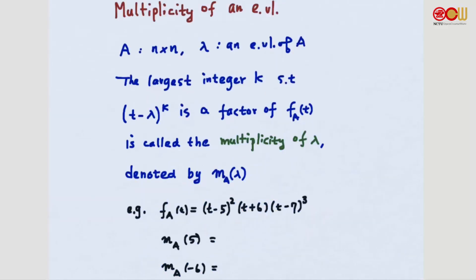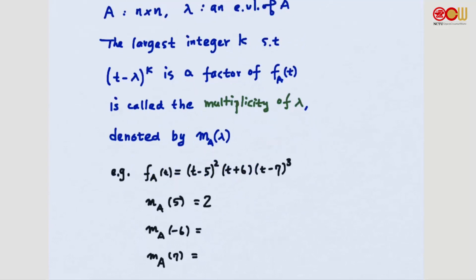For example, suppose we have a matrix A whose characteristic polynomial is the one given here. Then we see it has eigenvalues 5, -6, and 7. The multiplicity of eigenvalue 5, m_A(5), would be the largest integer such that t minus 5 raised to that power is a factor — so m_A(5) equals 2. m_A(-6) equals 1, and m_A(7) equals 3.